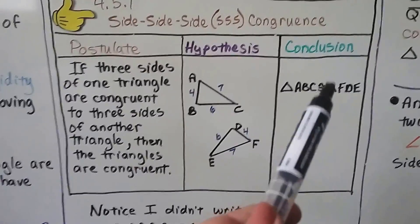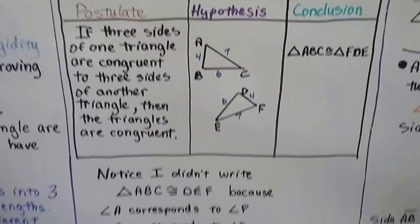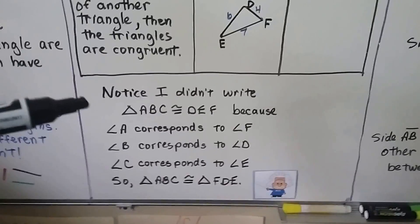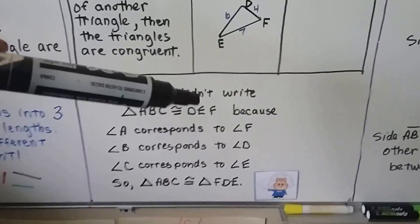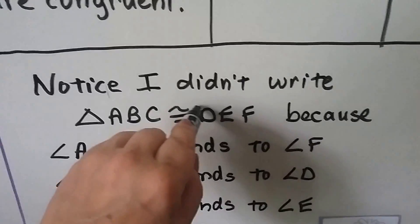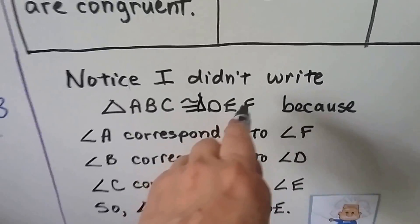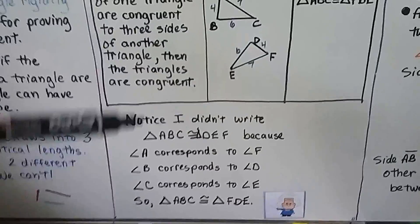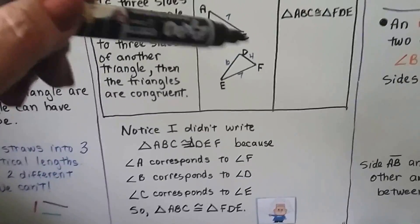Now see how I put FDE instead of DEF? This is why — I didn't write DEF for the congruent triangle. In fact, we should have a triangle symbol here. I didn't put DEF because angle A is corresponding to angle F.